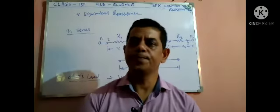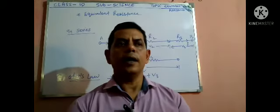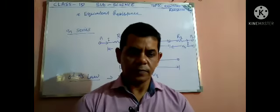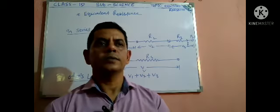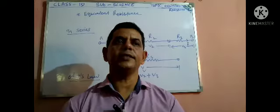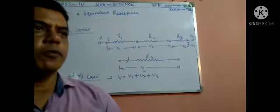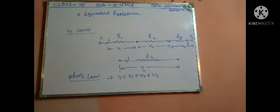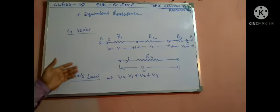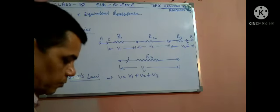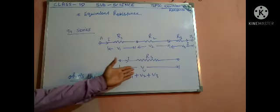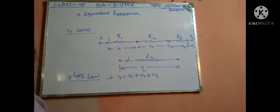In equivalent resistance, the known parallel and series combination of resistance — that is algebraically — so that is equivalent resistance. Equivalent resistance of a set of resistors in a series connection or a parallel connection is equal to the algebraic sum of the individual resistance, that is individual resistance taken in series.